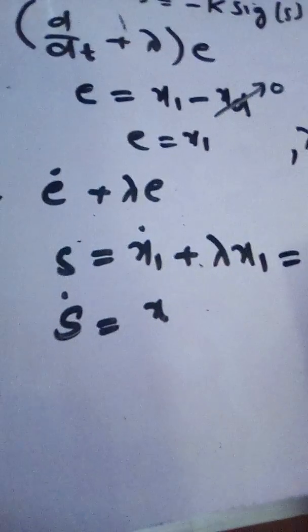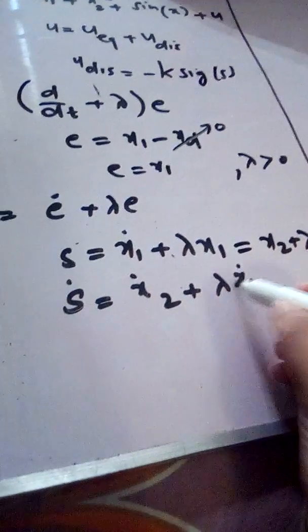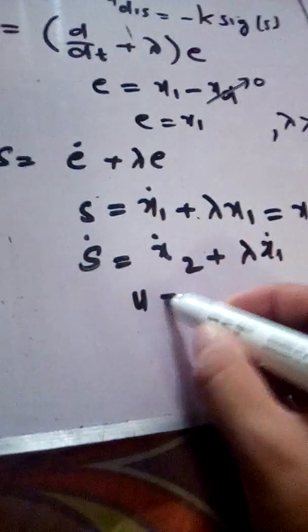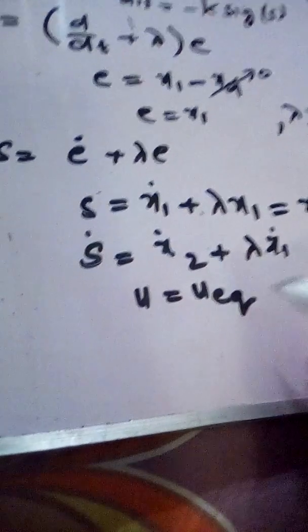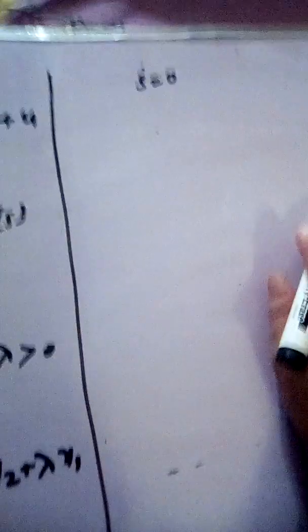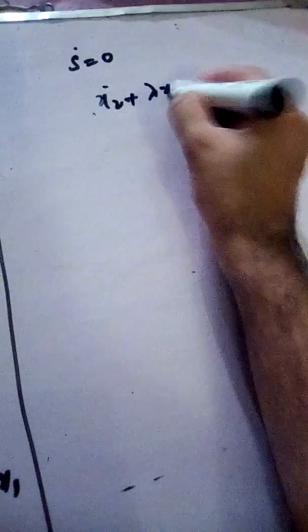The derivative of the sliding surface is: s_dot = x2_dot plus lambda times x1_dot. During the sliding mode, u equals u_equivalent, meaning sliding mode has occurred. In that case, the derivative of the sliding variable equals zero, so we have s_dot equals zero, giving us: x2_dot plus lambda times x1 equals zero.